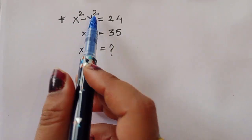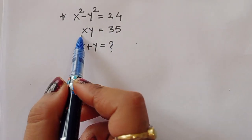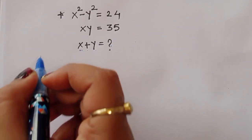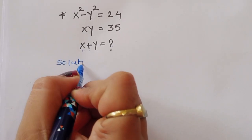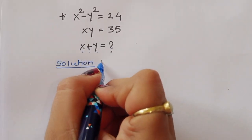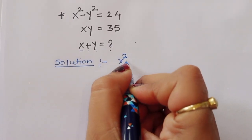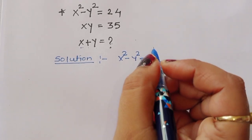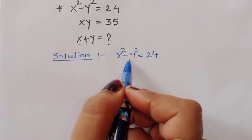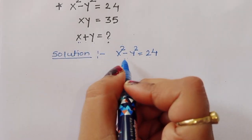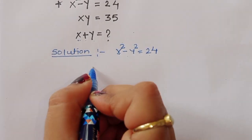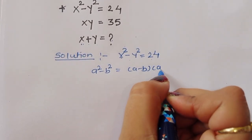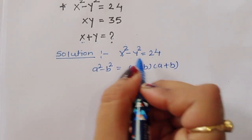Given x squared minus y squared is equal to 24, and xy is equal to 35, we have to find the value of x plus y. Let's see the solution. x squared minus y squared equals 24. This follows the formula a squared minus b squared equals a minus b times a plus b.